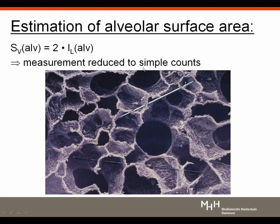If we could stick needles into the lung's inner surface, we could estimate the surface area because the number of intersections of the needle with the surface is proportional to the surface fraction. What we can learn is that the measurement to obtain surface area is reduced to simple counts — we count the number of intersections: 1, 2, 3, 4, 5, 6, 7, 8 intersections in that case.